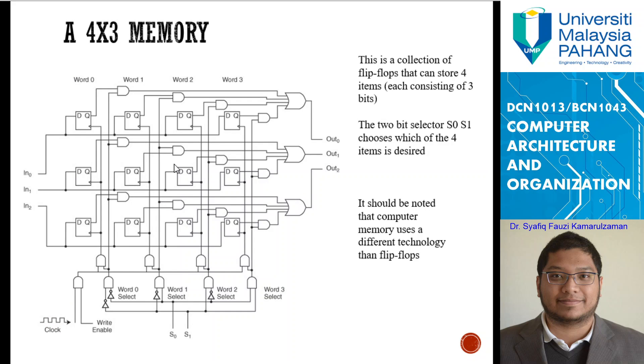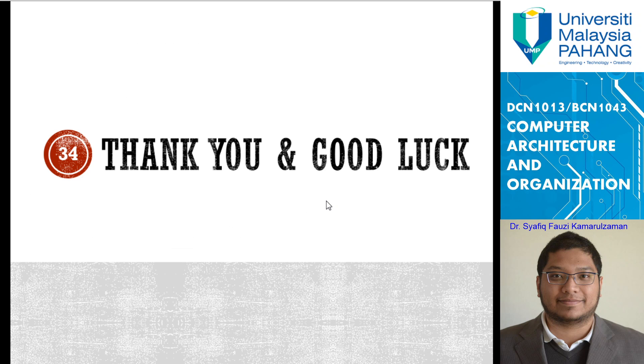This one is an example of a 4 times 3 memory. You have 4 bits, but you can store it in 3 locations. Each of these containing 4 bits. Here is where you have the control that controls which location should write the data or not. In case the clock is enabled, write enable decides which flip-flop to store the data, and the data will be stored at those set of flip-flops.